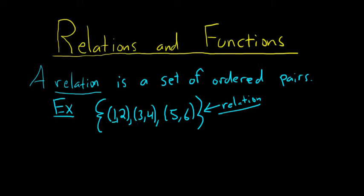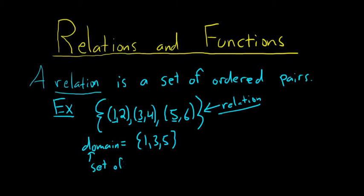The set of first components is called the domain. So the domain in this case would be the set containing 1, 3, 5. That's the set of first components — you can think of these as the x values.